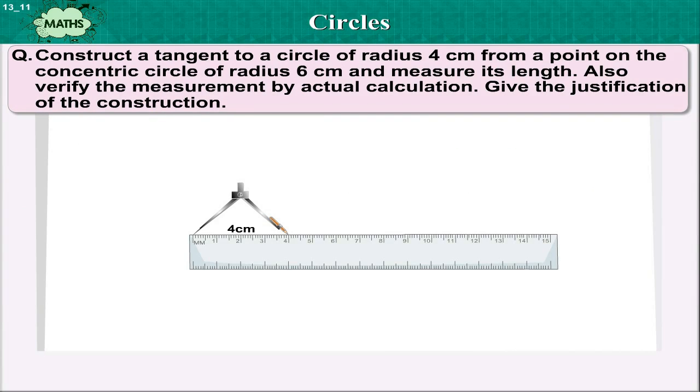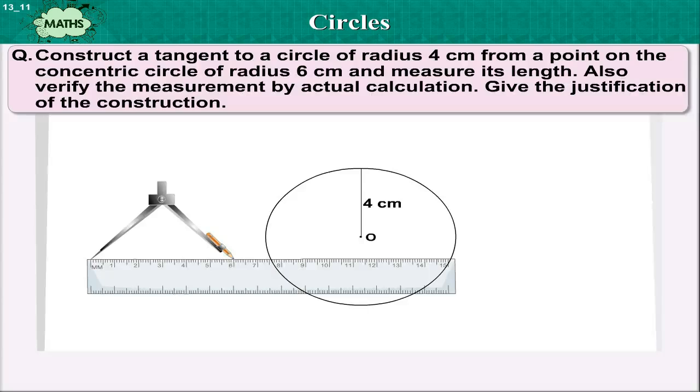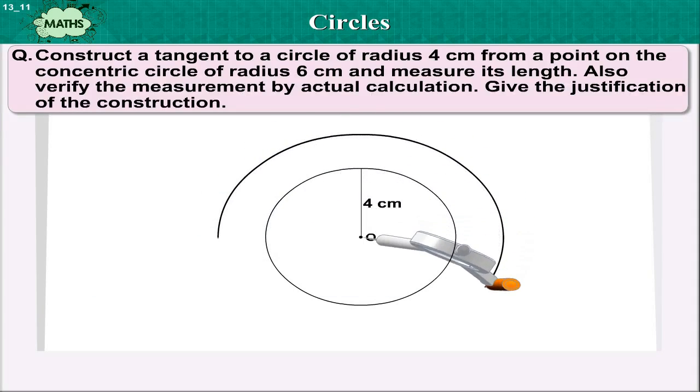Construct a tangent to a circle of radius 4 cm from a point on the concentric circle of radius 6 cm and measure its length. Also verify the measurement by actual calculation. Also give the justification of the construction.